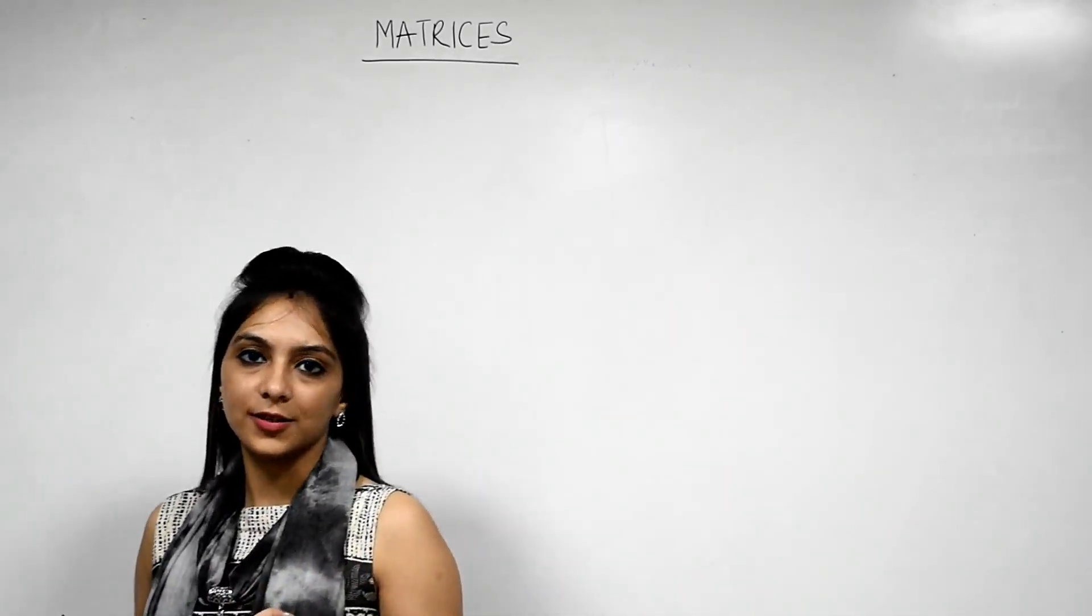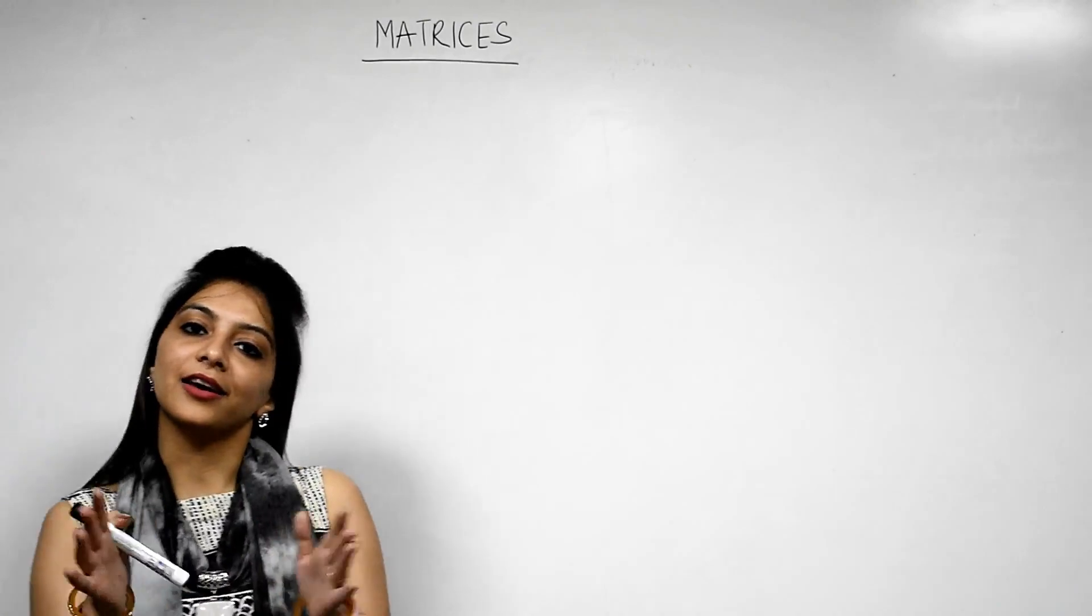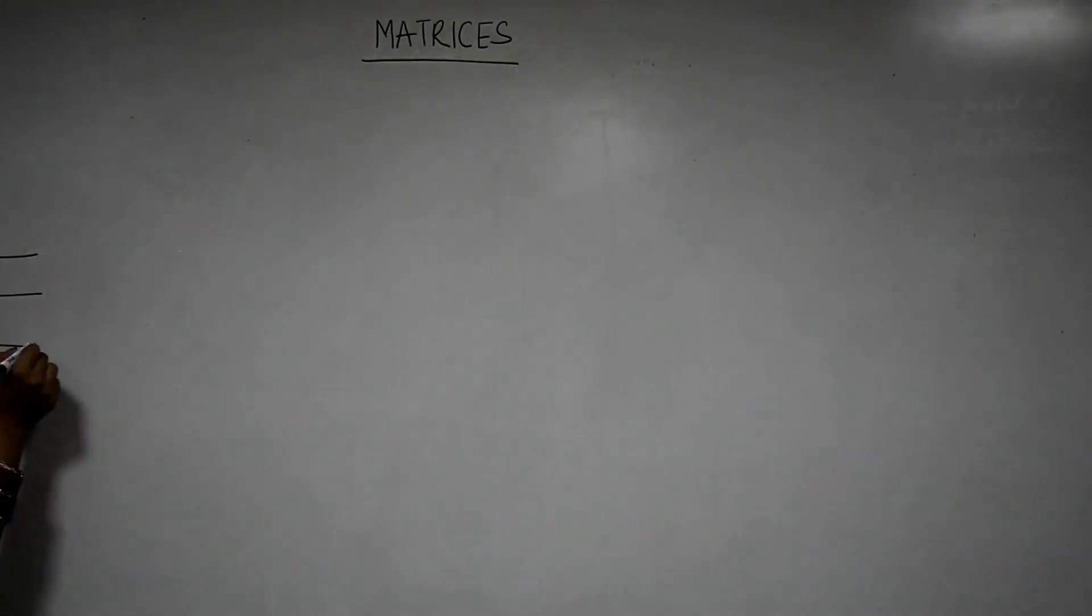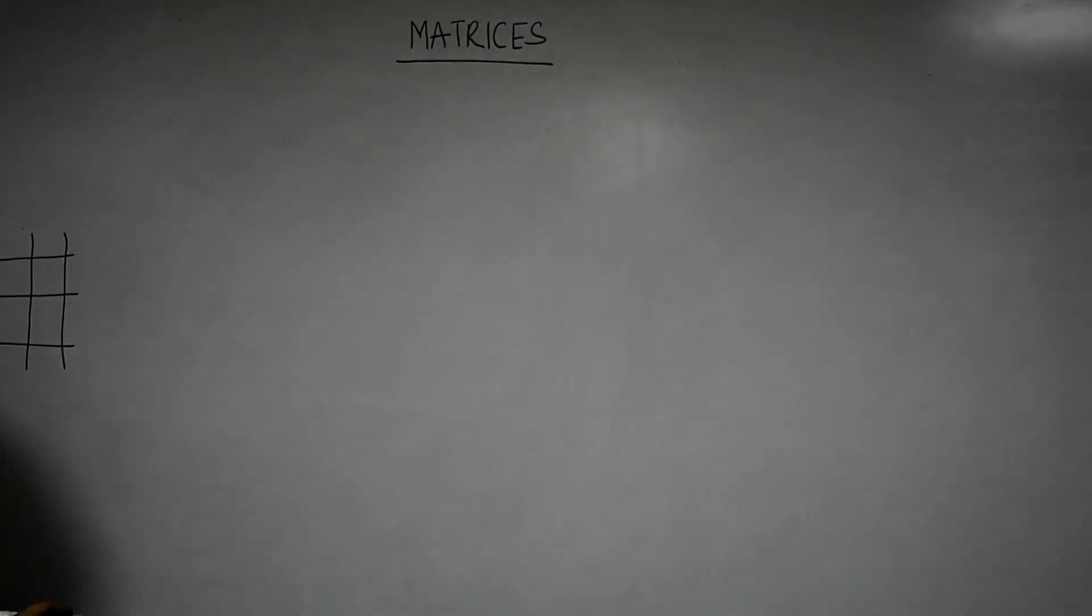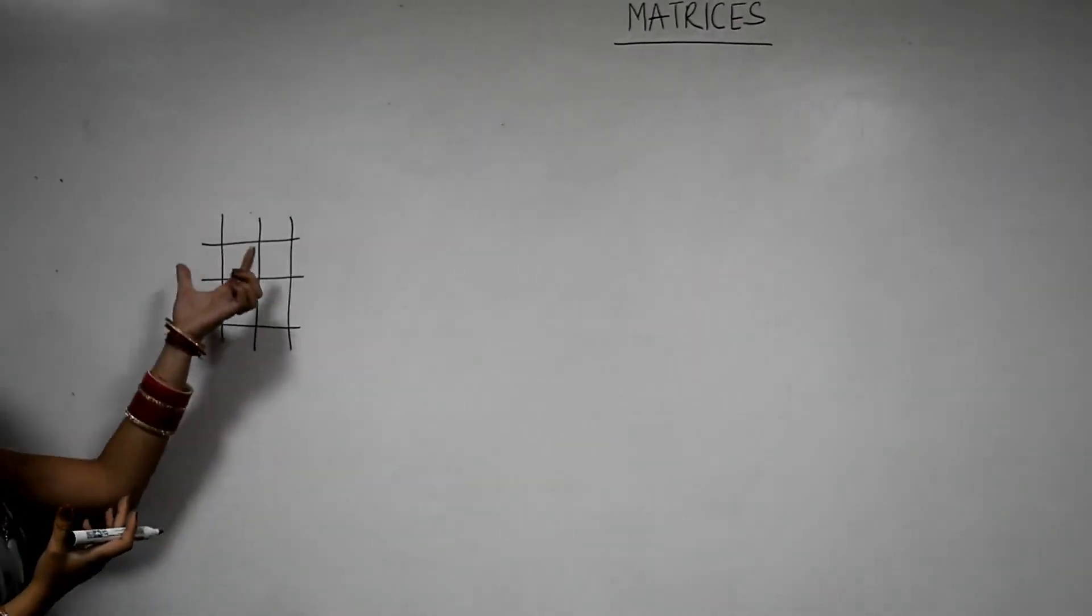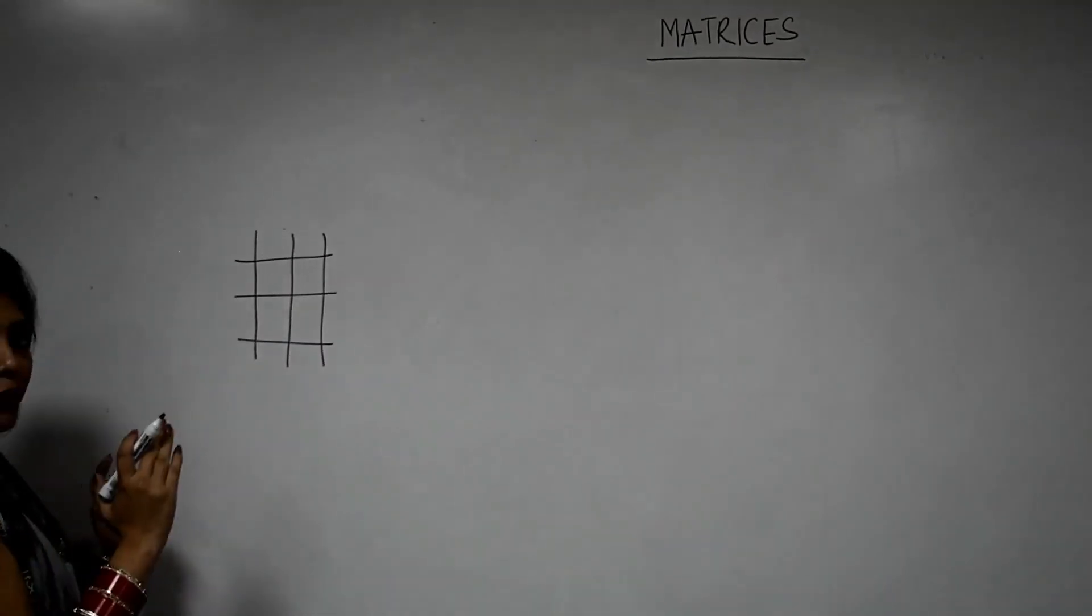First of all, what is a matrix? A matrix means an arrangement in the form of row and column. These horizontal lines are called rows and these vertical lines are called columns. When we talk about order of a matrix, it means number of rows and number of columns.